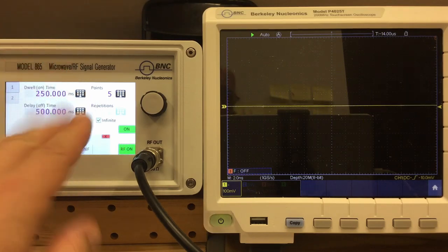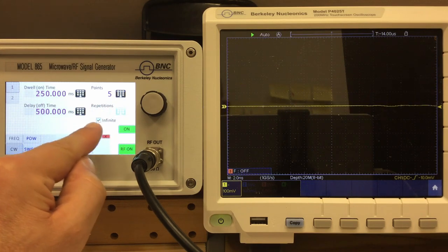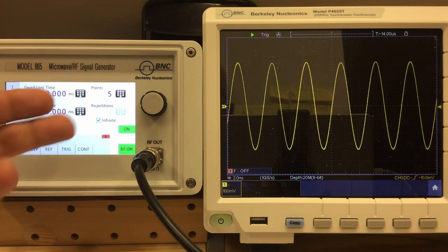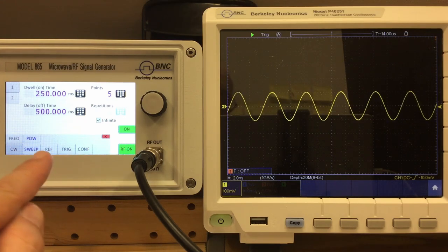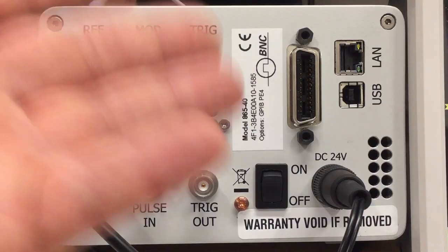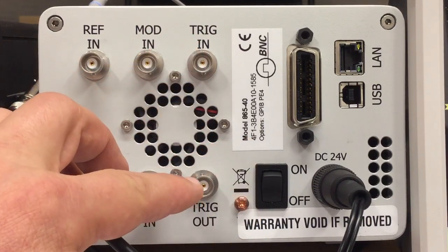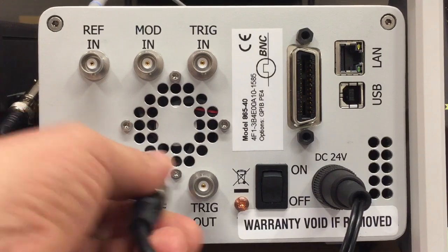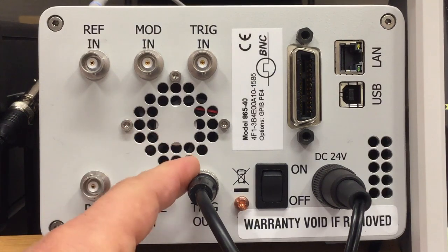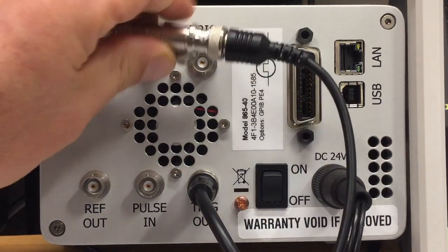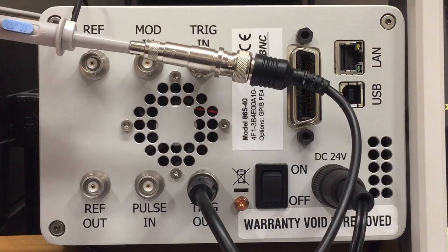Within that submenu, you also have the possibility to specify a number of repetitions. Currently, I have here the check mark on infinite, so it repeats infinitely. But that only makes sense in conjunction with triggers. So we will have a look at triggers next. When talking about triggers, we need the associated BNC connectors at the back: trigger in and trigger out. So one channel of my oscilloscope, which I previously used for the reference out, goes now to trigger out. And I will connect a trigger source here to the trigger in. And that goes also to the oscilloscope.